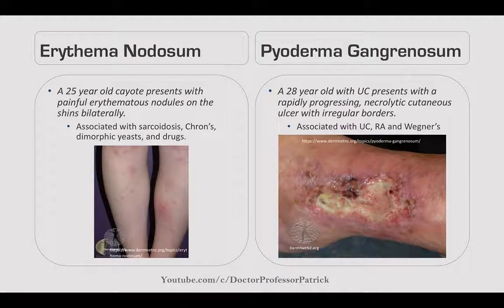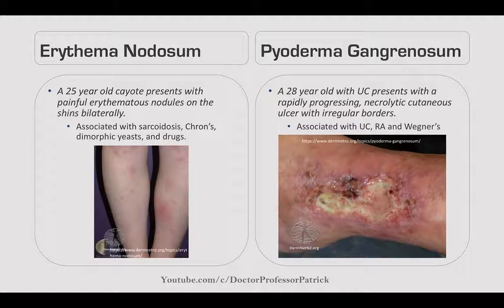Comparing erythema nodosum and pyoderma gangrenosum: erythema nodosum is a 25-year-old with painful erythematous nodules on the shins bilaterally, associated with sarcoidosis, Crohn's disease, dimorphic yeast infections, and drugs. Pyoderma gangrenosum is a 28-year-old with UC who presents with a rapidly progressing necrolytic cutaneous ulcer with irregular borders, associated with UC, RA, and Wegener's.